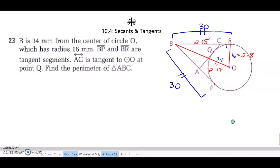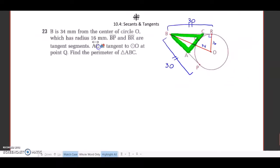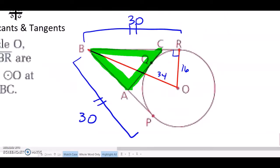We are tasked with finding the perimeter of that triangle. It does tell us that AC is tangent to circle O at point Q. That must mean that CR is congruent to CQ.